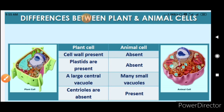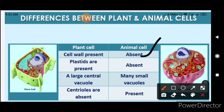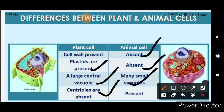Now the differences between plant and animal cells: in plant cells a cell wall is present; in animal cells it is absent. Plastids, including chloroplasts, are present in plant cells and absent in animal cells. Plant cells have a large central vacuole, while animal cells have many small vacuoles. Centrioles are absent in plant cells but present in animal cells.